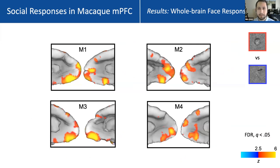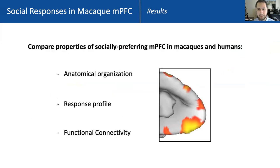We've identified a set of regions in medial prefrontal cortex that appear to have some social specialization in that they respond to faces over objects. We then wanted to compare the anatomical and functional properties of these areas to what we know about corresponding social cognition areas in humans — comparing their anatomical organization, their response profile across multiple categories, and their functional connectivity in the resting state.